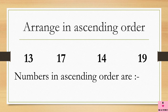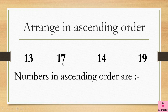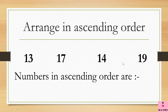For arranging numbers in ascending order, the very first thing is you must always read the numbers. When you read the numbers you will automatically understand them. These are all two-digit numbers — you can see there are two digits in them. In 17, seven is at one's place and one is at tens place. In 14, four is at one's place and one is at tens place. In 19, nine is at one's place and one is at tens place. Please notice that in all these numbers the tens place digit is the same.